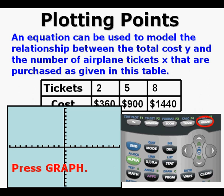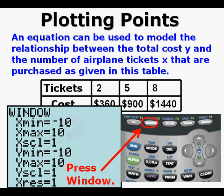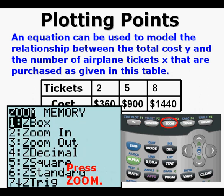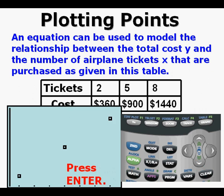Press GRAPH. We can ask the question: how can we see no points plotted? We see no points plotted because the window is not set up to see these points with its current settings. To fix that, let's press WINDOW. These are the standard window settings: X minimum of negative 10, X maximum of 10, Y minimum of negative 10, and Y maximum of 10. Press the ZOOM key, arrow down to 9 — ZOOM STAT — and press ENTER. We can now see the three points on the view screen.